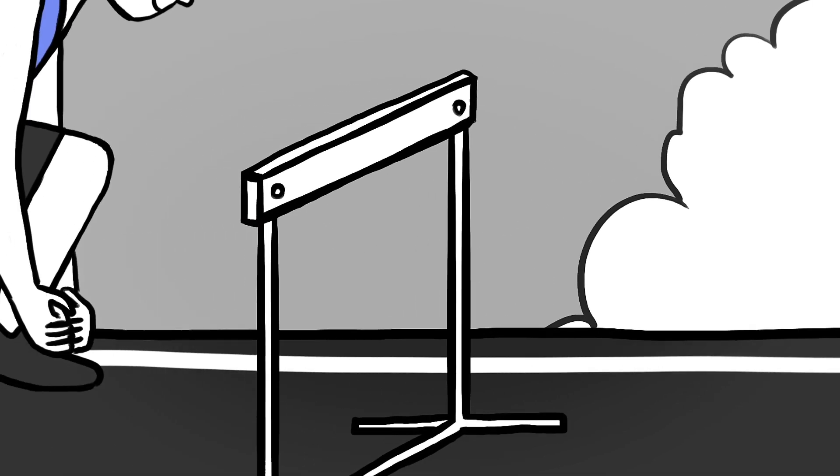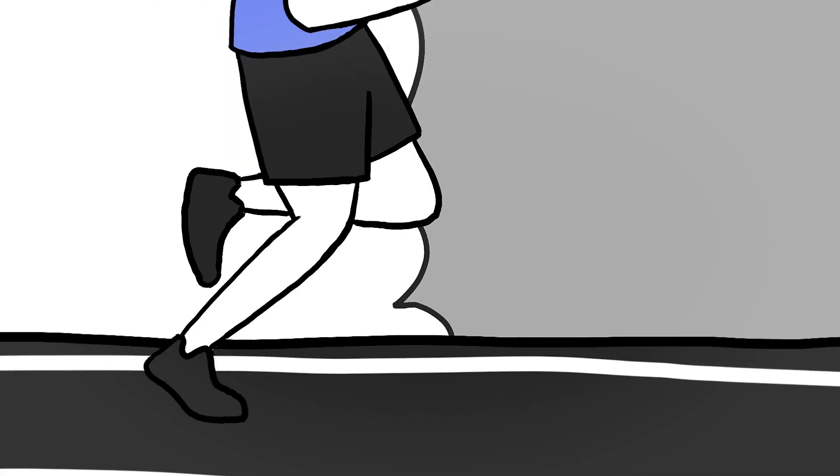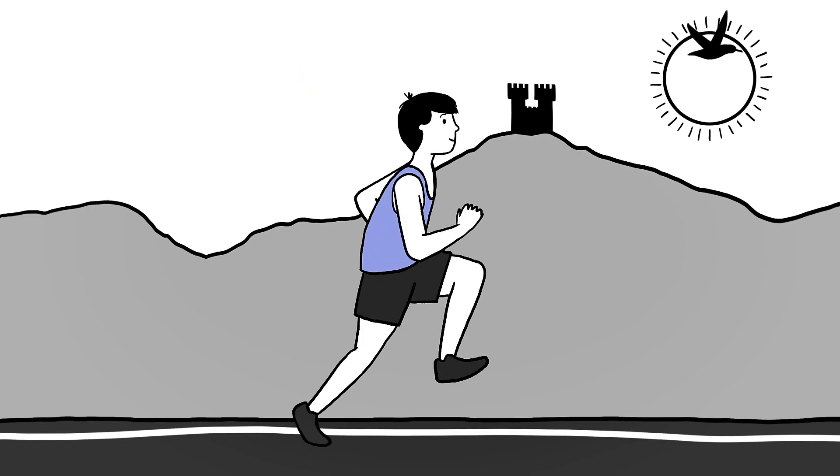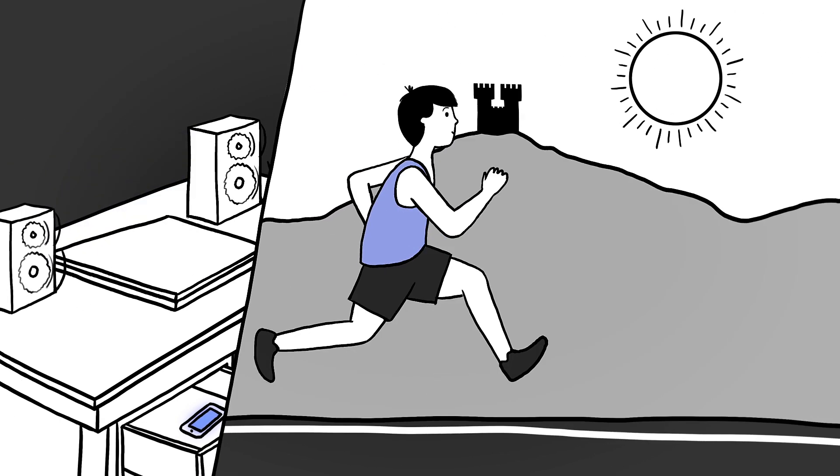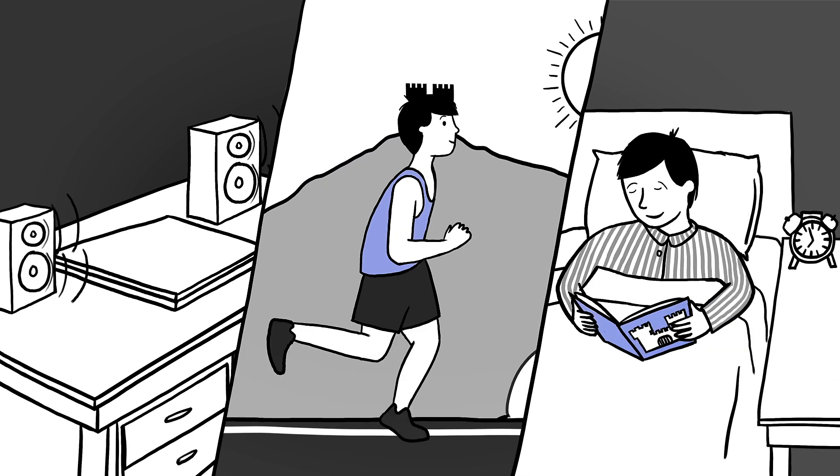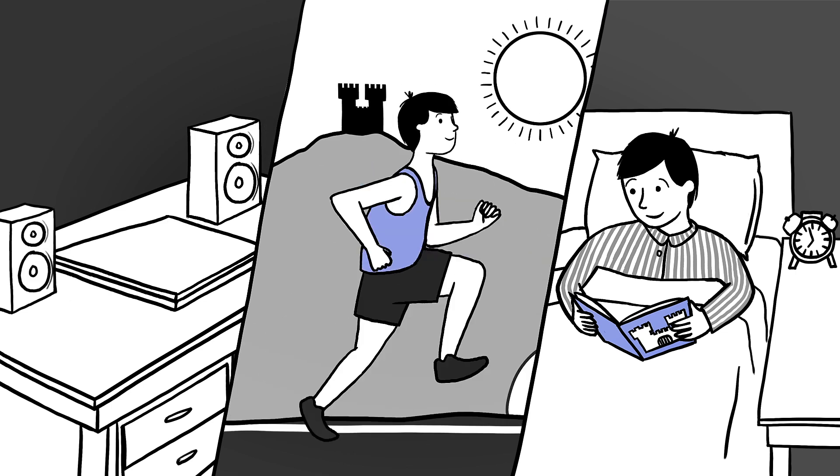While researchers try to unravel sleep's mysteries, there are steps autistic people can take to alleviate their sleep problems. Exercising during the day, limiting exposure to noise and digital screens before bed, building a routine around sleep, and having a consistent bedtime are all associated with improvements to the quality of slumber.